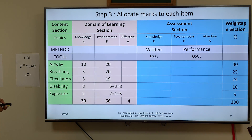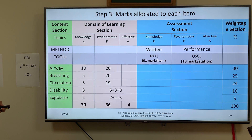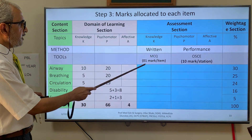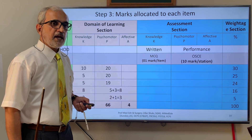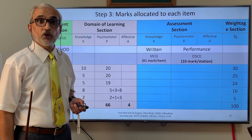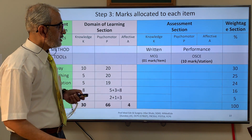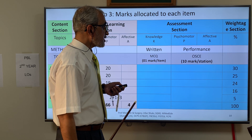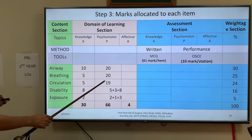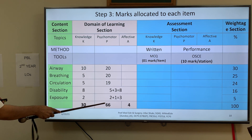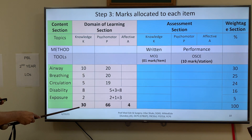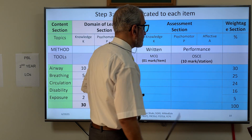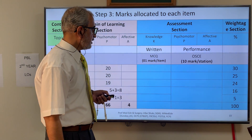Once clear on method and tool, the third important step is to allocate marks to each item. We decided each MCQ would be one mark per item, the paper would consist of 30 MCQs with no negative marking. For performance, OSCE would have seven stations, each worth 10 marks. Since the psychomotor component is much larger compared to the knowledge component, we are giving more marks to the OSCE performance as compared to the written examination.